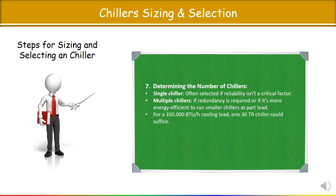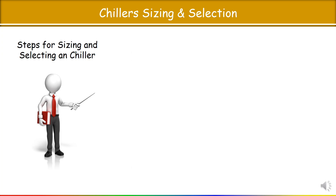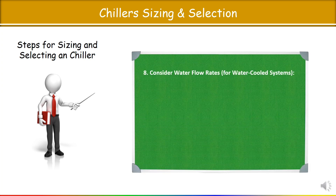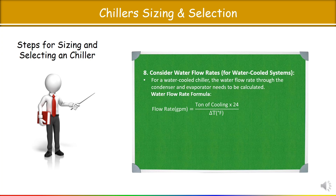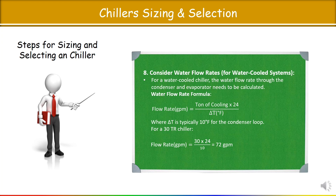For example, for a 350,000 BTU/hr cooling load, a single 130 TR chiller would suffice. However, for redundancy or efficiency at part load, you might select 2 × 15 TR chillers. For a water cooled chiller, the water flow rate through the condenser and evaporator needs to be calculated. The formula is: Flow Rate (GPM) = Cooling Load (TR) × 24 ÷ ΔT. Assuming ΔT = 10°F and chiller capacity = 30 TR, you get a flow rate of 72 GPM.